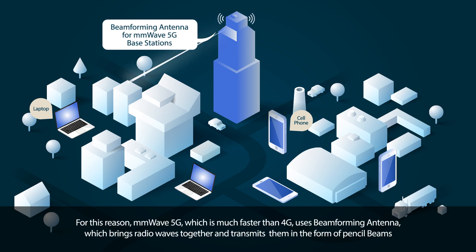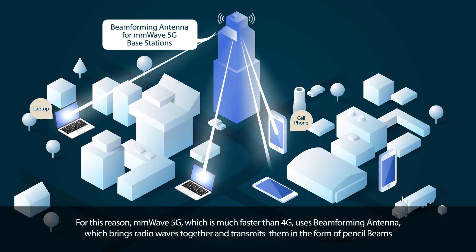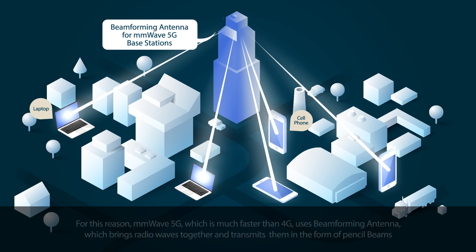For this reason, millimeter wave 5G, which is much faster than 4G, uses beamforming antennas, which bring radio waves together and transmit them in the form of pencil beams.